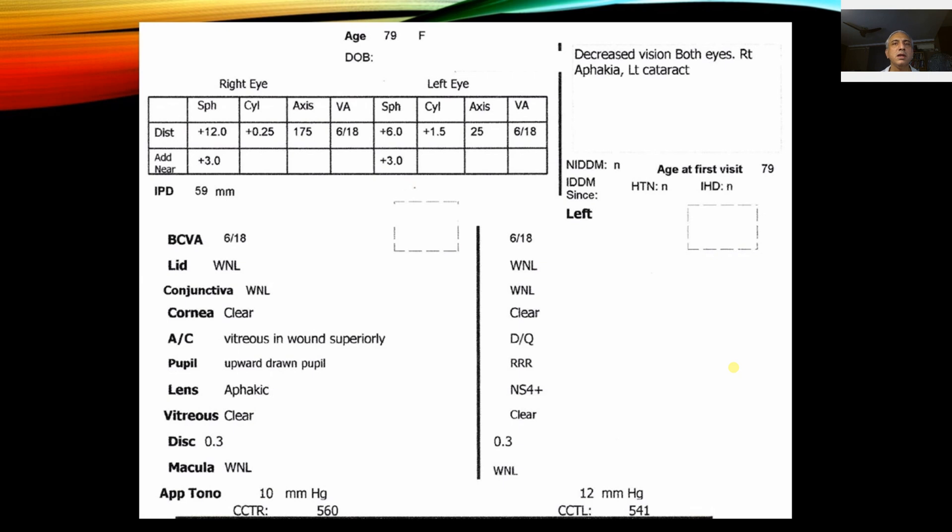She has nucleus sclerosis of NS4 plus on the left eye but is still hypermetropic. Nucleus sclerosis of plus 4 causes the hypermetropia to become less, so she's now plus 6, though previously she was probably plus 10. On the other side, she's aphakic, and aphakia typically produces a refraction of plus 12 because of the absence of the lens.